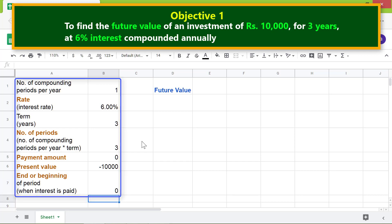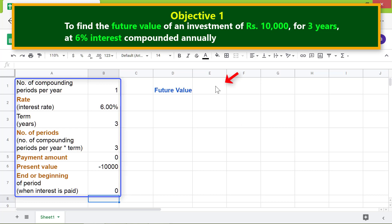All right, let's type the future value formula in this cell. First, type equal to F. Select FV from the menu.